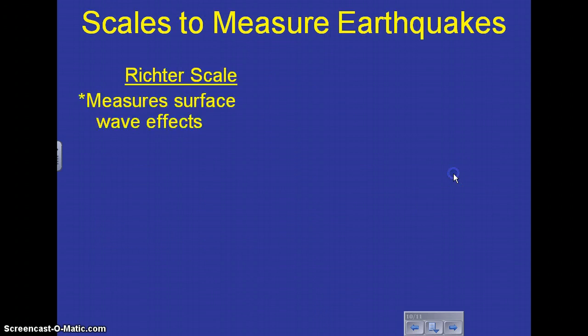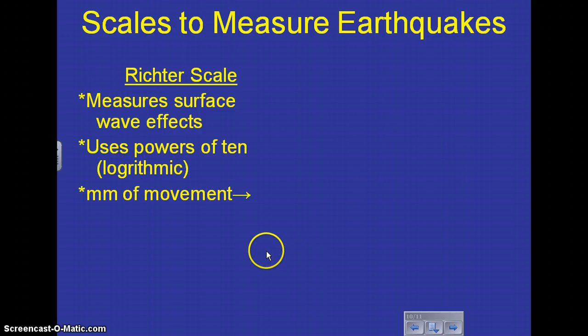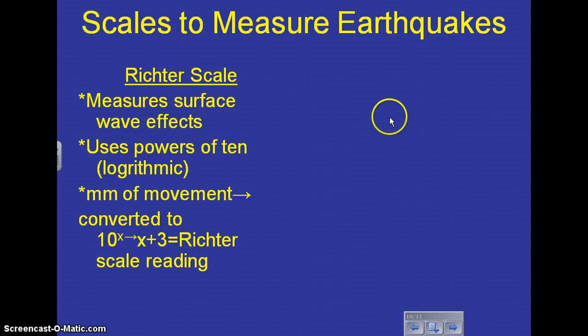There are a couple different types of measurement systems that you can use to measure earthquakes. One is called the Richter scale. This is the most common scale. The Richter scale measures the surface wave effects, and it is using powers of 10. And what you do to figure out the Richter scale is you look at how much movement happened. You change that movement into a power of 10, like 10 to the x power. And then whatever that exponent is, you add 3 to it, and that ends up being your Richter scale reading. And we will practice doing this later on in an assignment in our chapter. It has 10 levels. 10 is the highest level on the Richter scale, the most powerful level.